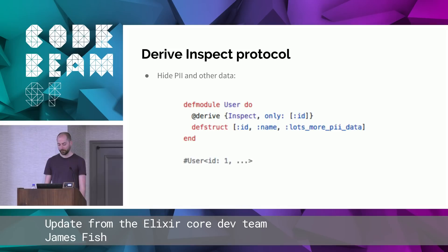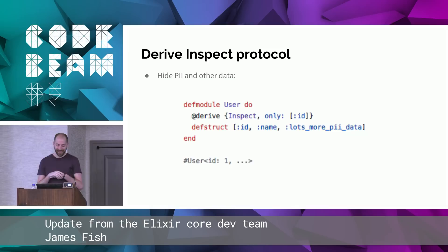The derive inspect protocol allows you to automatically list the keys you want to include. If anyone has worked on GDPR, you might be very familiar with what you need to do here. At the bottom you can see what it looks like when you inspect with include_only — it skips those extra keys that you don't want to show.